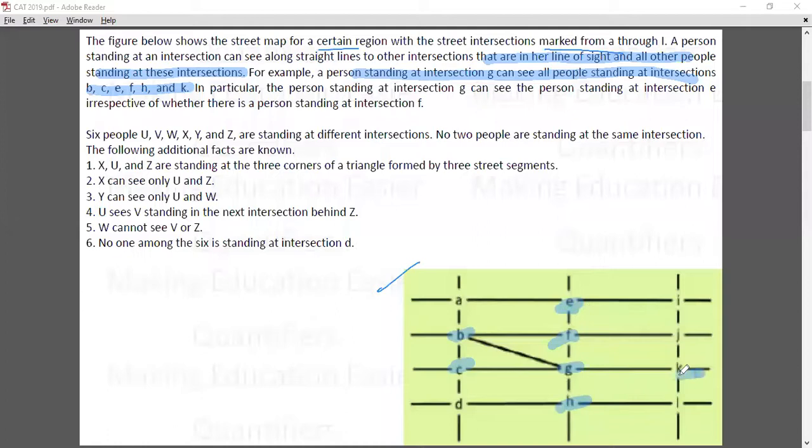In particular, the person standing at intersection G can see the person standing at E, irrespective of whether there is a person standing at intersection F. This means if there are three slots and someone is standing in between, it won't matter - the person will be able to see him or her.